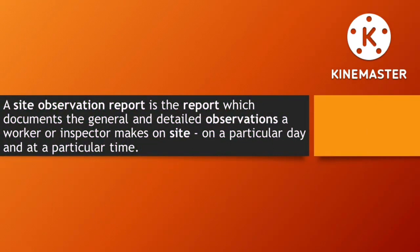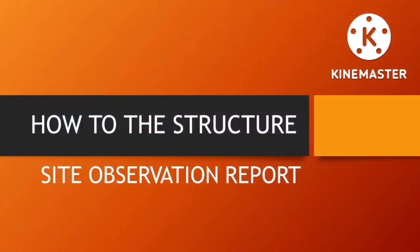In your system, you will have a main folder for site observation report, or what we call SOR. Inside that folder, you put the SOR reference number, the subject, and the closure sheet. It is very important to keep the revisions so you know which one is the latest revision approved when they submit the closure sheet for a certain SOR number. A site observation report is the report which documents the general and detailed observations a worker or inspector makes on site on a particular day and at a particular time.